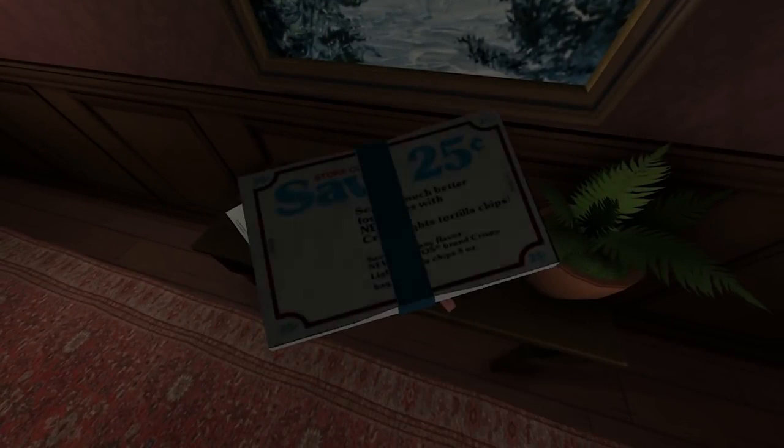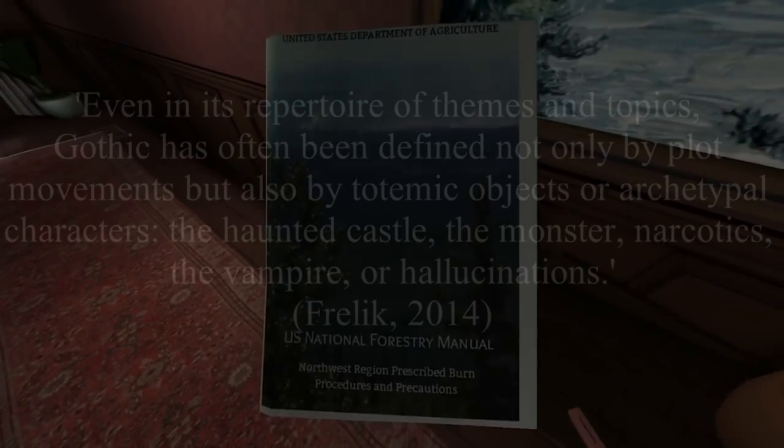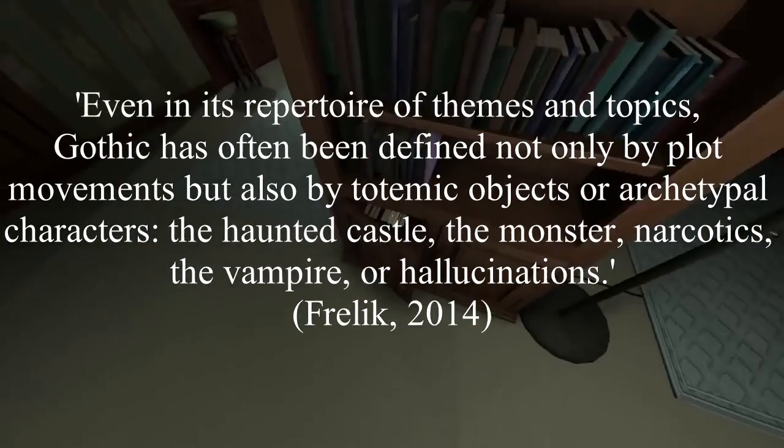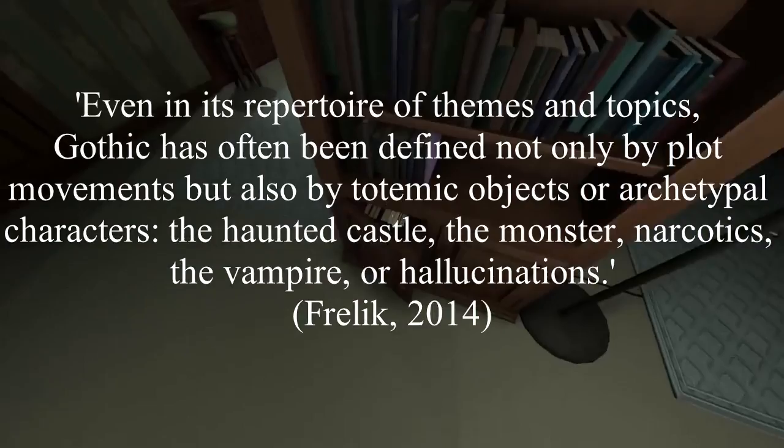The Fulbright Company's Gone Home follows a similar premise to Jane Eyre, using Gothic elements and common tropes in a unique way to support a story about romance and freedom. Gothic has often been defined not only by plot movements, but also by totemic objects or archetypal characters — the haunted castle, the monster, narcotics, the vampire, or hallucinations.